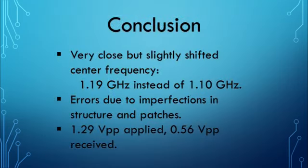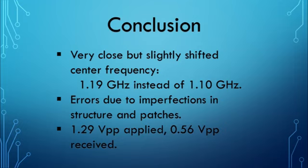The expected frequency was 1.1 GHz, but the observed frequency was 1.19 GHz. This slight shift in frequency corresponds to an 8% error, which I believe is due to imperfections in the structure. We applied 1.29 V peak-to-peak and received 0.56 V peak-to-peak. Not a perfect result, but we do have a resonating wave at the designated frequency inside the cavity. The voltage loss could likely be decreased by ensuring no gaps remain — in my design, the top lid was sealed from the outside, which may have impacted the voltage loss.